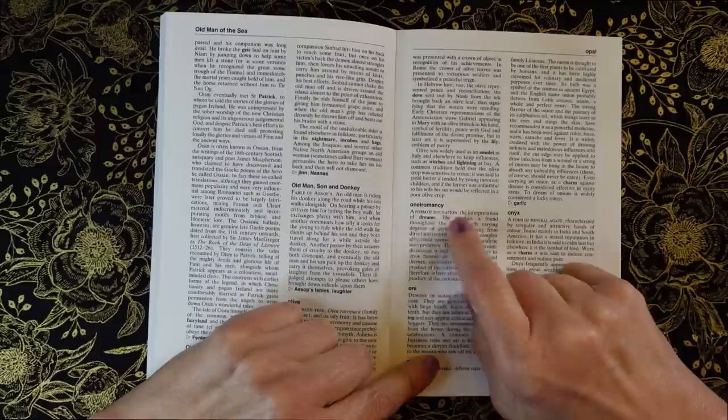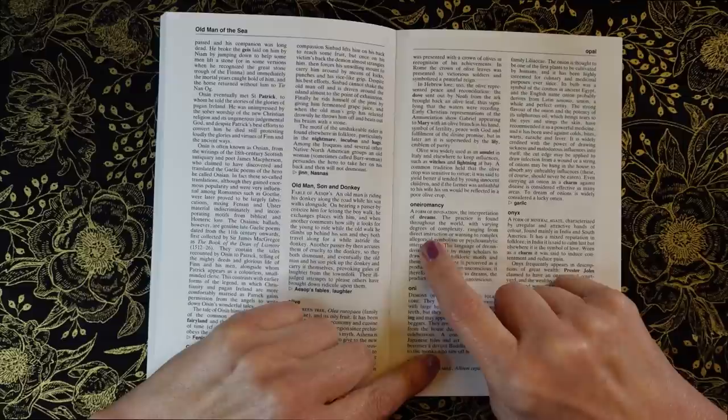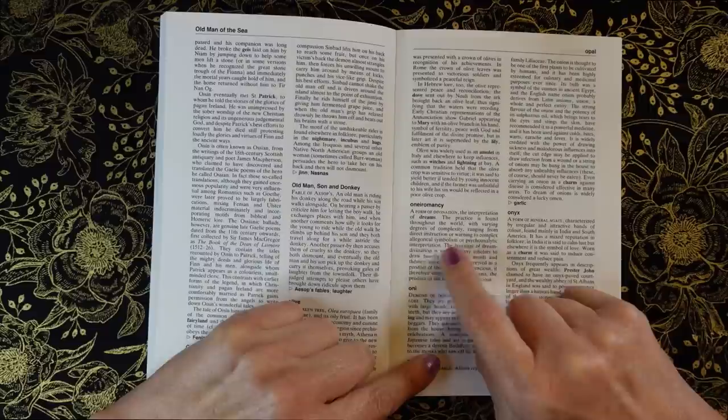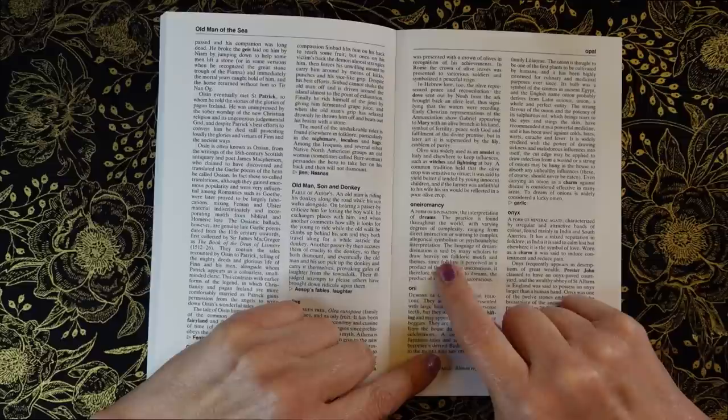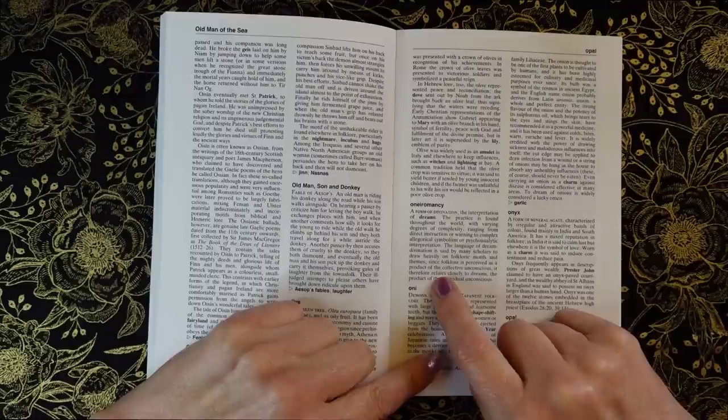Oneiromancy, a form of divination, the interpretation of dreams. The practice is found throughout the world with varying degrees of complexity, ranging from direct instruction or warning to complex allegorical symbolism or psychoanalytic interpretation. The language of dream divination is said by many scholars to draw heavily on folklore motifs and themes. Since folklore is perceived as a product of the collective unconscious, it therefore relates closely to dreams, the product of the individual unconscious.